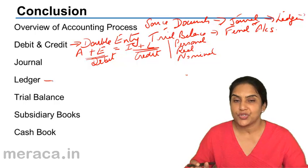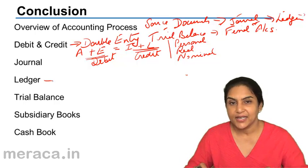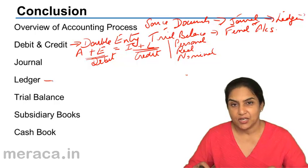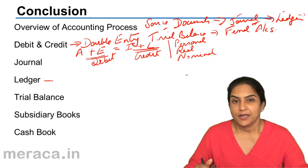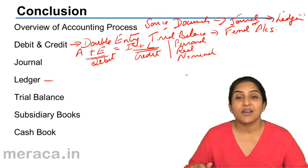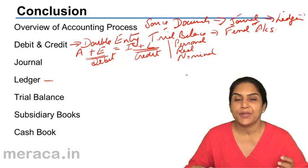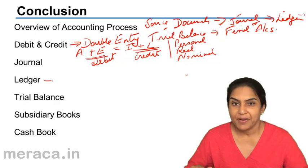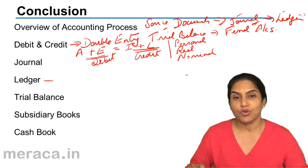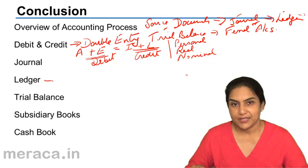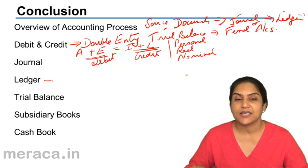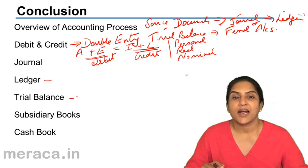A ledger account has two sides, the debit and the credit side, and at the end of a period, the ledger accounts are balanced. What is balanced? We compare the debit side with the credit side. If the debit side is more, it's a debit balance. If the credit side is more, it is a credit balance. These balances are then taken to the trial balance.